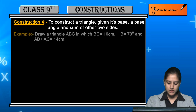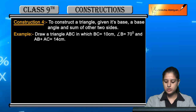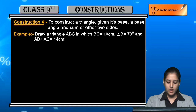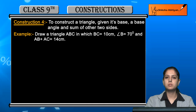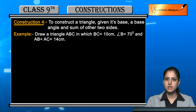Let's take an example. Draw triangle ABC. BC is equal to 10 cm — the base is given as 10 cm. Angle B is equal to 70 degrees — the base angle is 70 degrees. And AB plus AC, the sum of the other two sides, is 14 cm. So these three conditions are given.